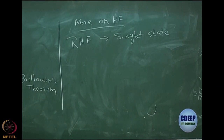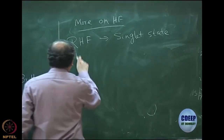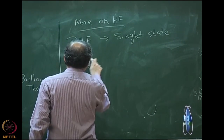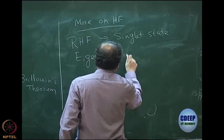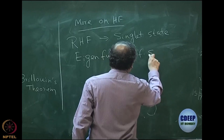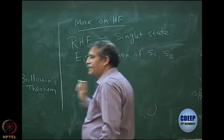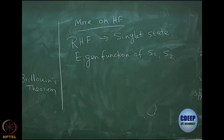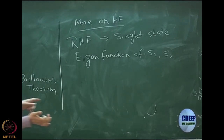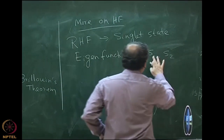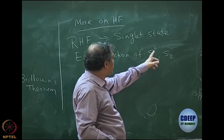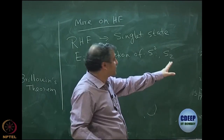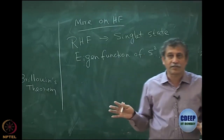What does a singlet state or a triplet state mean? It is an eigenfunction of S-squared and one of the S operators - conveniently taken as S-z, just like angular momentum. For an eigenfunction of S-squared, you have eigenvalue sqrt(S(S+1)) times h-bar, and for S-z, you have just M_s times h-bar.